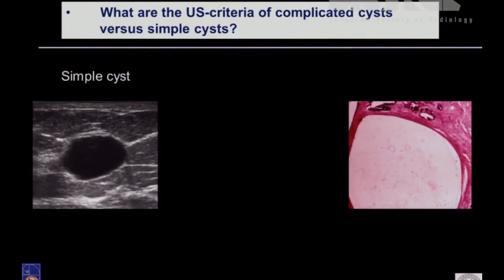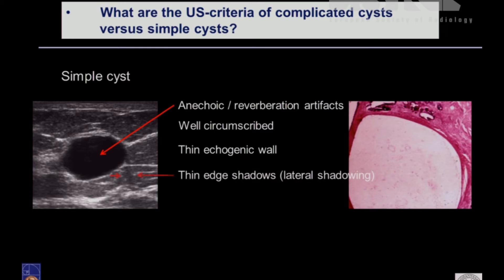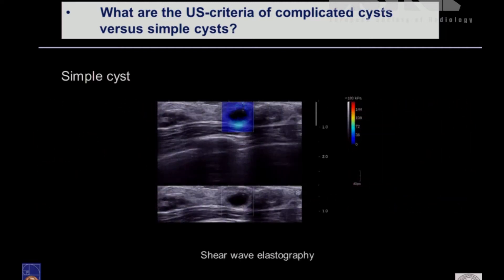What are the ultrasound criteria of the complicated cysts? We have to compare and say what are the criteria of the simple cysts. The simple cyst criteria are typically anechoic with reverberation artifacts, a well-circumscribed lesion, thin echogenic wall, and thin edge shadows. With compound imaging you can reduce this shadowing; without it you will see more pronounced enhanced through transmission. With shear wave elastography, you don't see shear wave propagation in the fluid, so it is a black hole in this lesion.